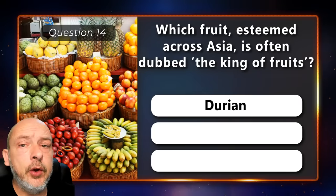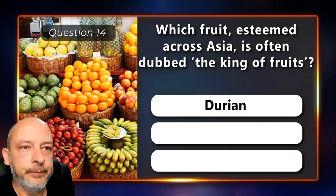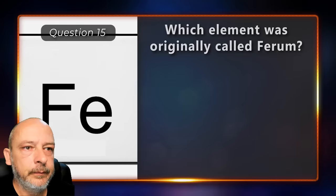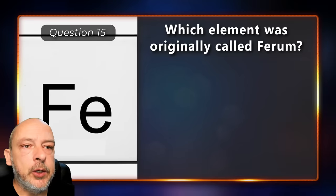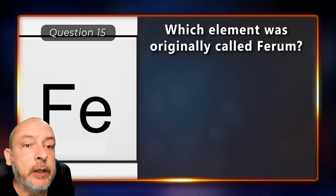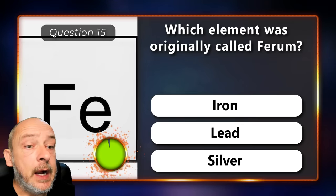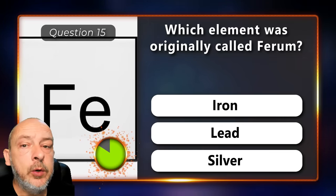The correct answer is the durian. Which element was originally called ferrum — iron, lead, or silver?